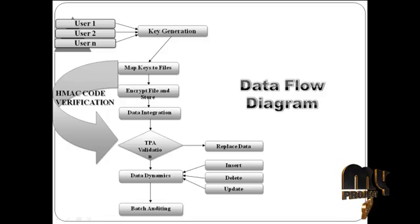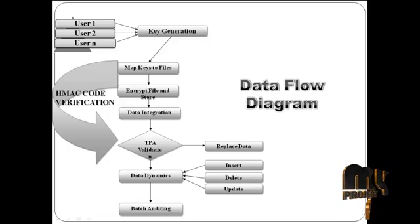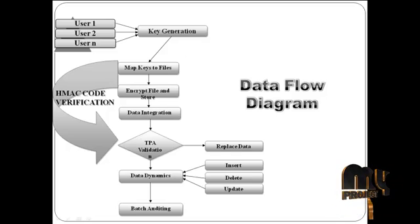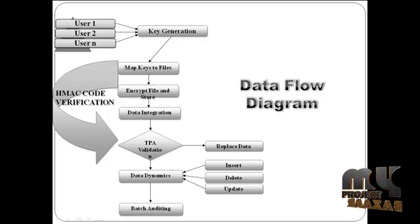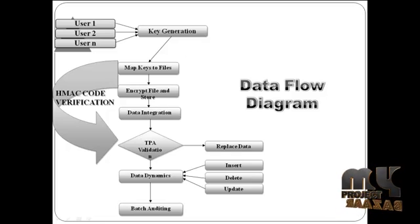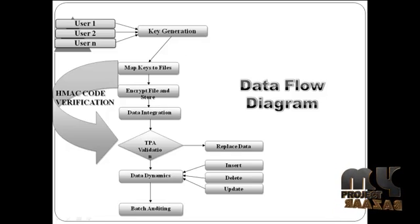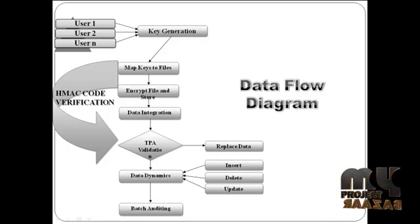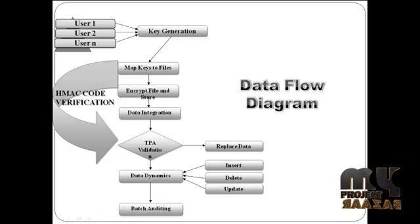After splitting the data into blocks, we encrypt each and every block and store it in the cloud server and also in the TPA - Third Party Auditor. After that, data integrity validation happens via the TPA, which generates data integrity proofs and retrieves proofs from the cloud server.